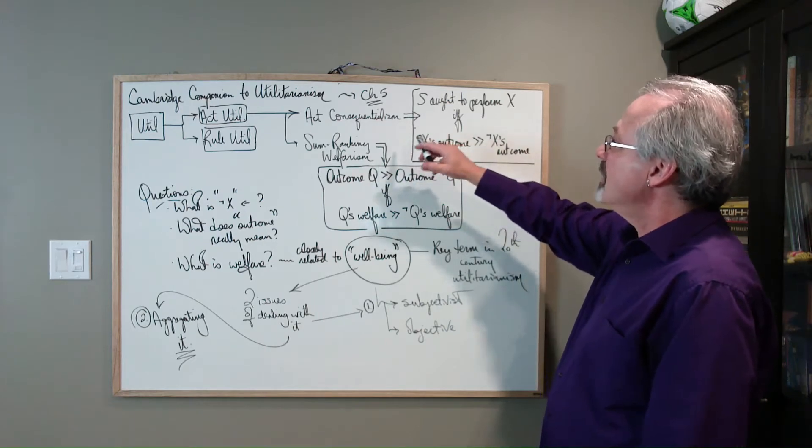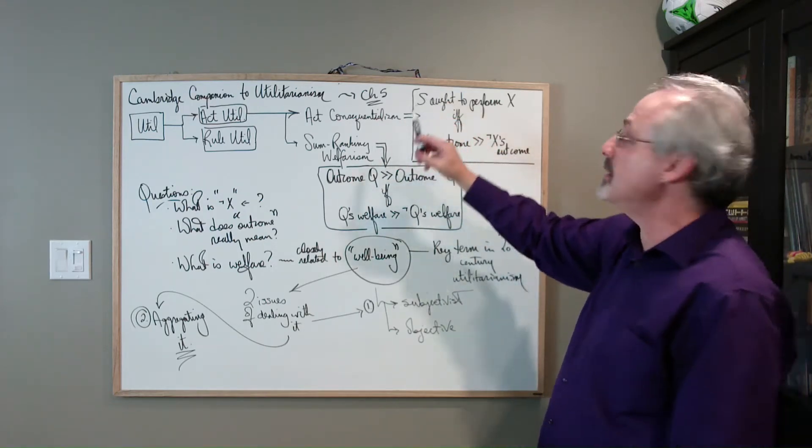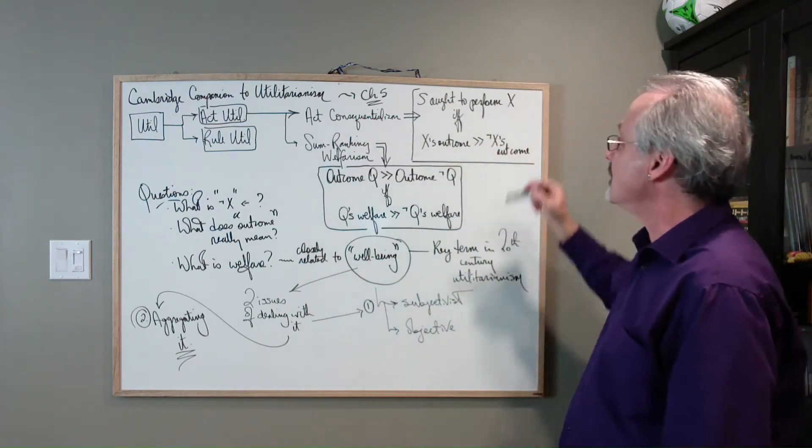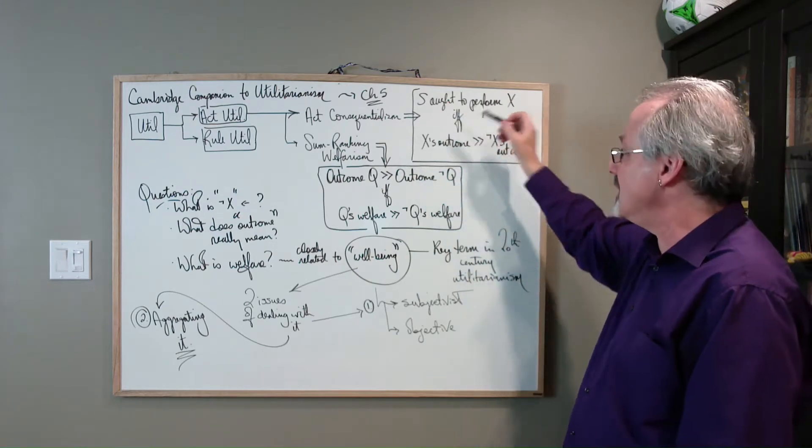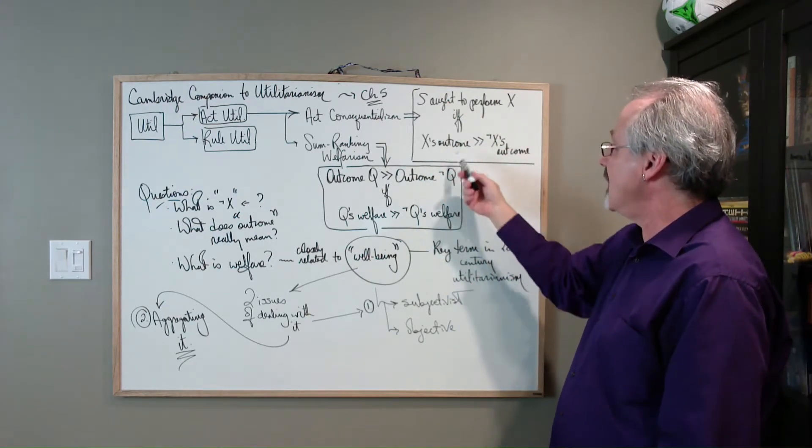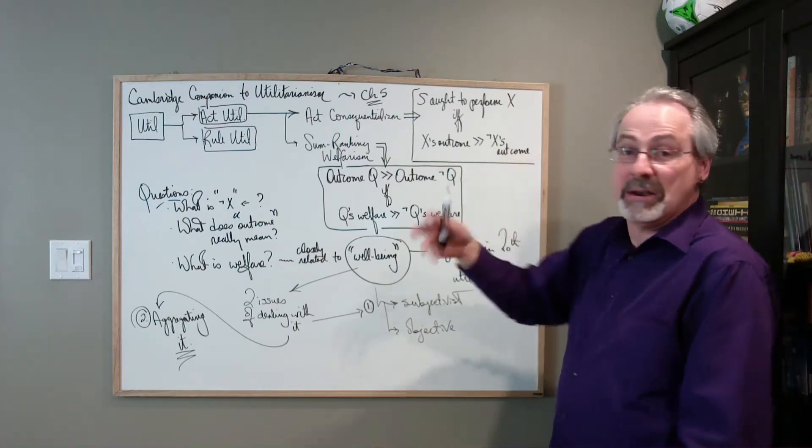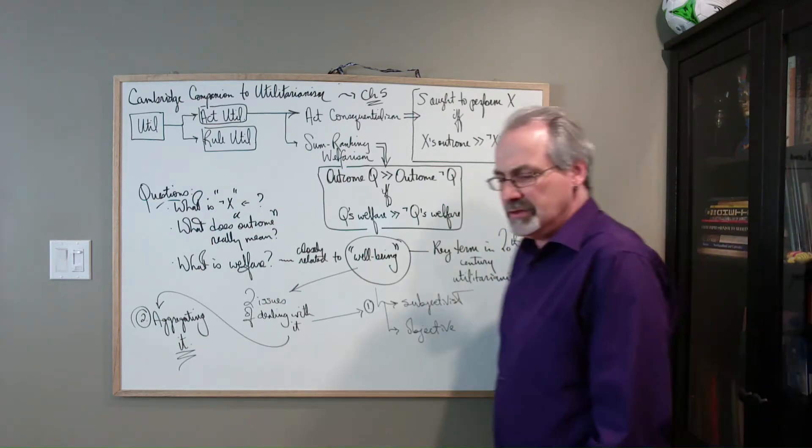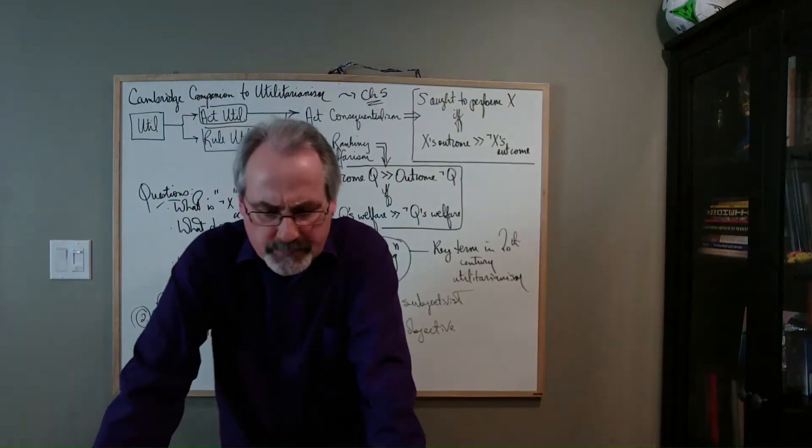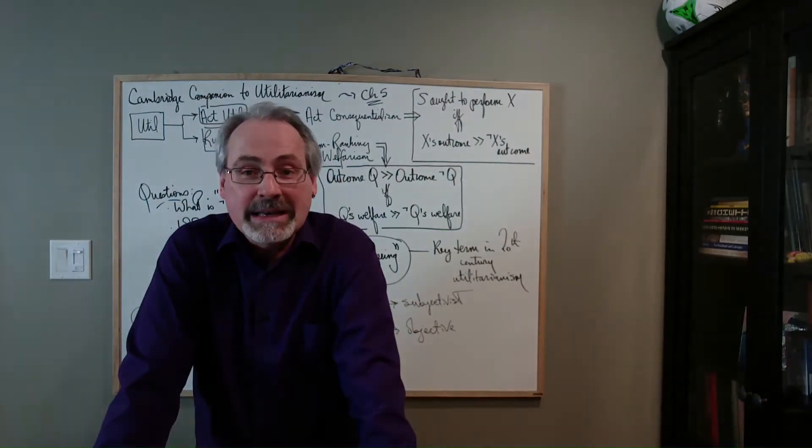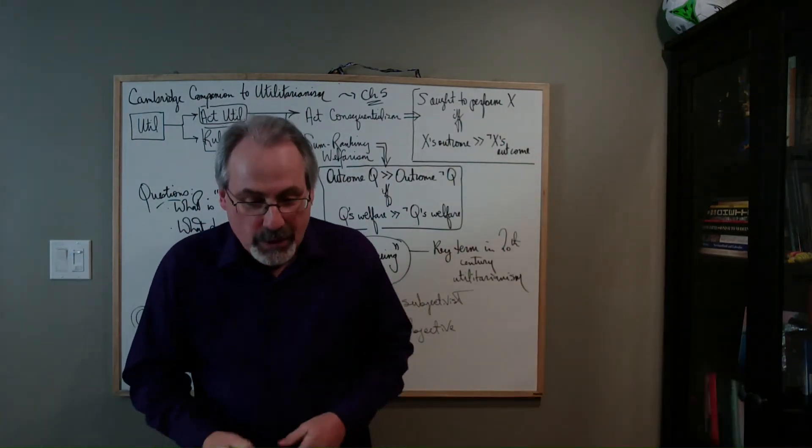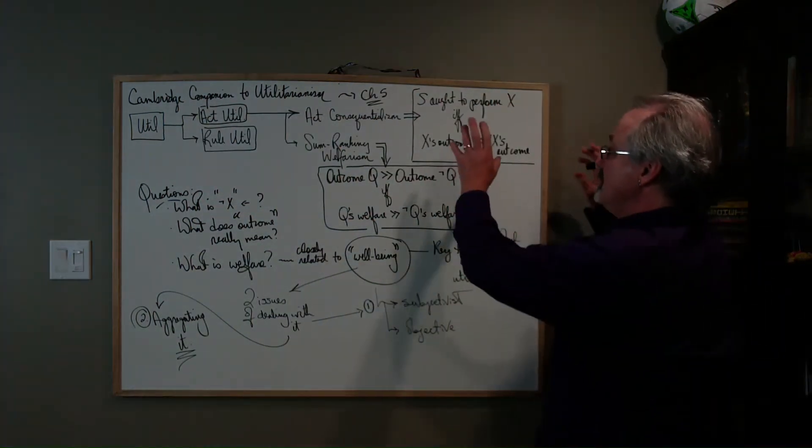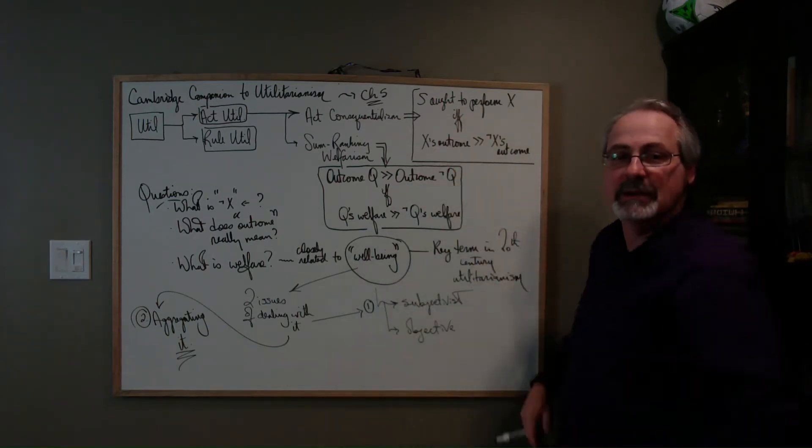So, act consequentialism, formulated roughly as S, S is a subject, ought to perform X, X is an action, hence act consequentialism, if and only if, provided that it is the case that the outcome of X is greater than, or is better than, not X's outcome. So, as you can see, it's already lending itself to a more technical kind of view. We're talking now about a variety of certain concepts that are involved, and they're going to have to be unpacked in more detail.